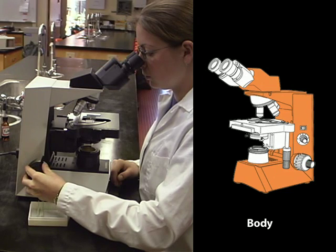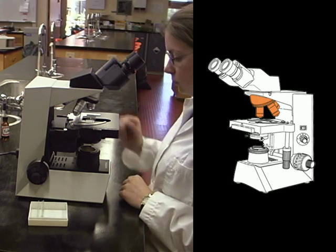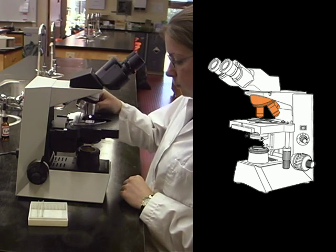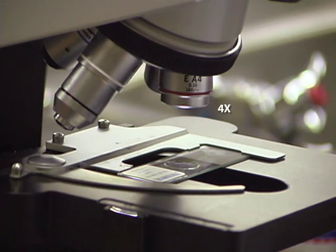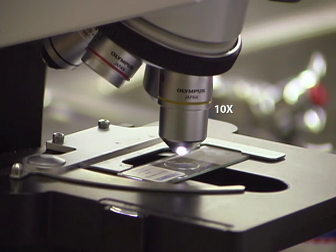The body of the microscope holds the lenses. Compound microscopes have two to five objective lenses mounted on a revolving nosepiece. Note that as the magnifications of the objective lenses increase, the physical lengths of the lenses increase.